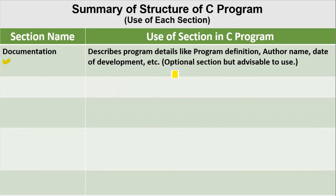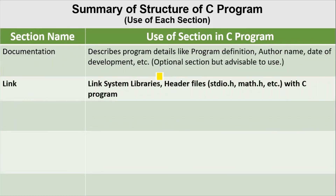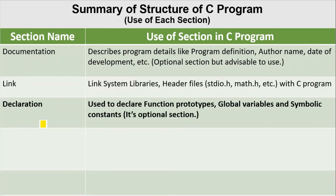The documentation section is optional but advisable to use. The link section allows us to link system libraries and header files like stdio.h, math.h, etc. with the C program. The declaration section is used to declare function prototypes, global variables, and symbolic constants. This is an optional section that we can use according to our program requirement.